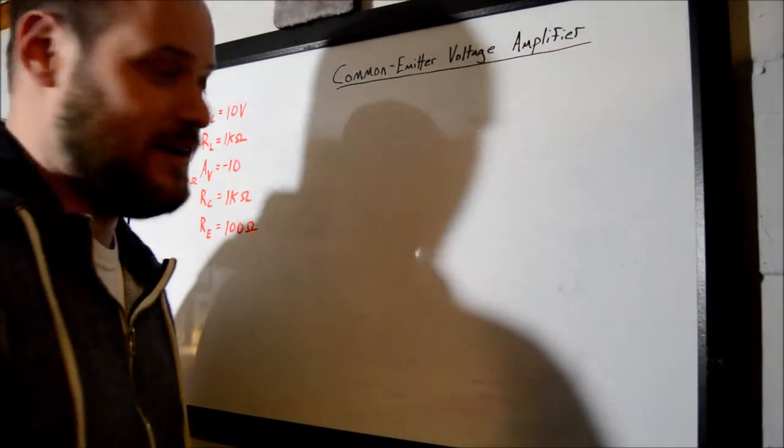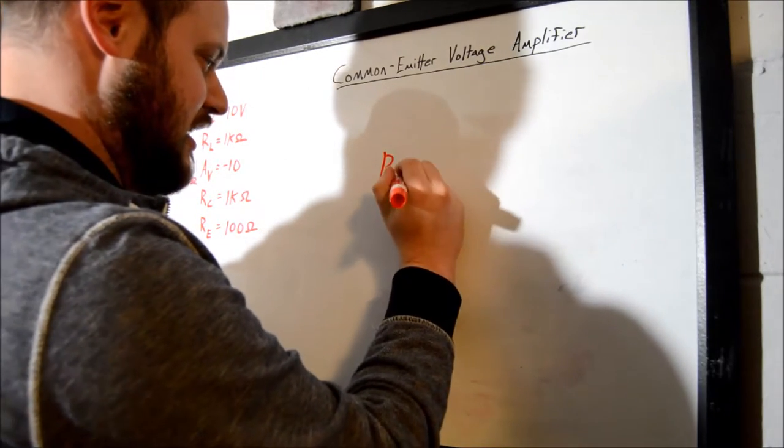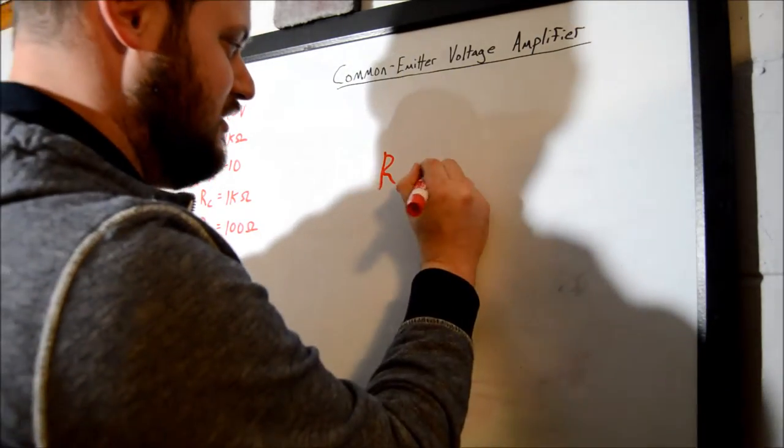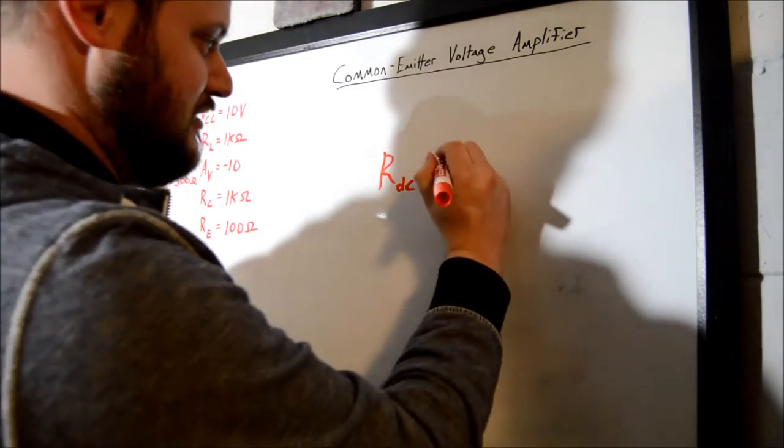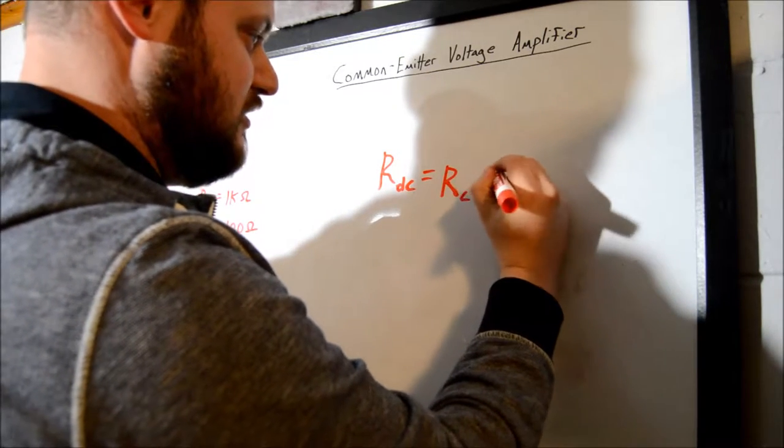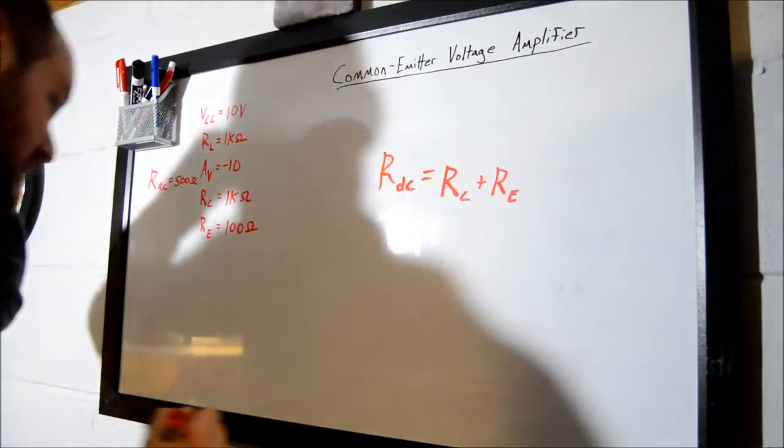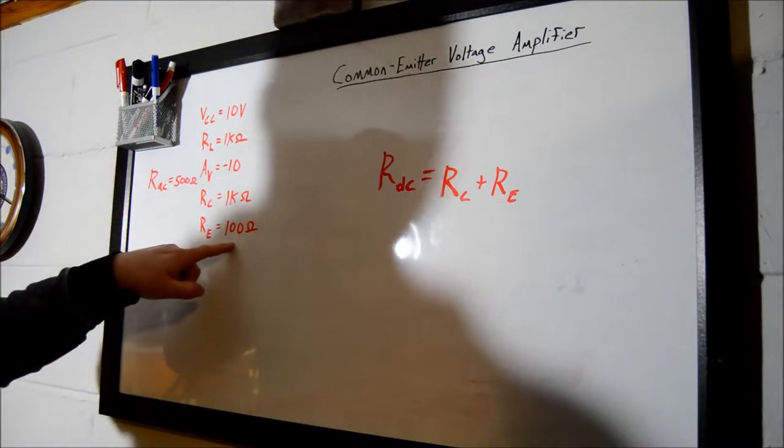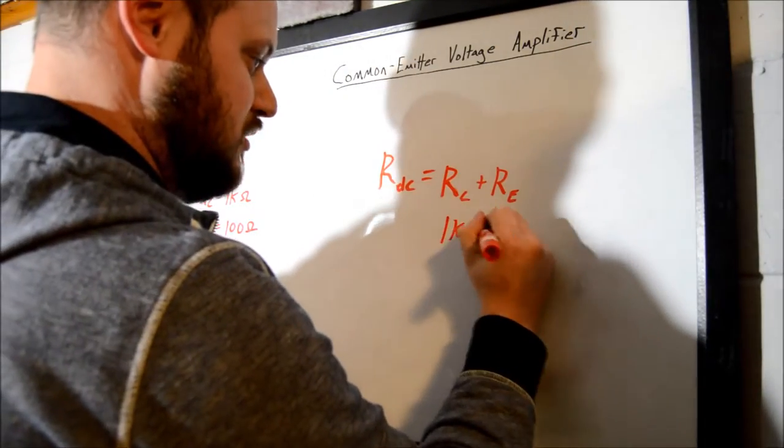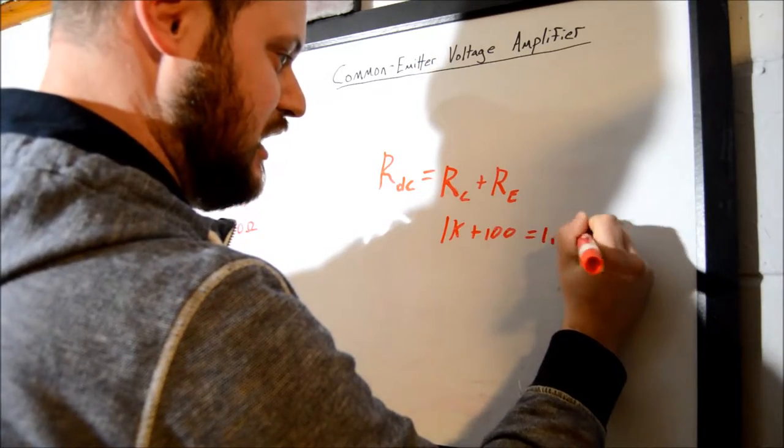The next thing we need to find is called RDC. That is the collector resistor plus the emitter resistor. Well, that's easy. We know that our collector resistor is 1K, our emitter resistor is 100, so 1K plus 100 equals 1.1K ohms.